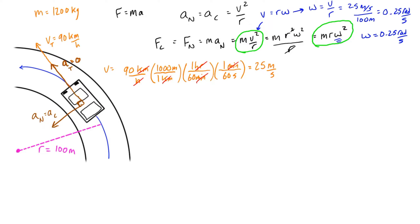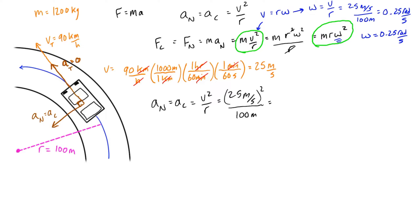Let's calculate the centripetal or normal acceleration first. a_n = a_c = v² / r = (25 m/s)² / 100 m, which reduces down to 6.25 meters per second squared. That is the normal acceleration.